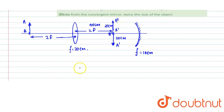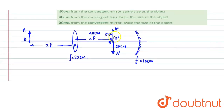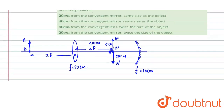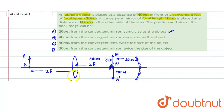Accordingly, A''B'' is the final image of AB. That means the image is 20 centimeters from the convergent mirror and it is the same size as the object. Accordingly, we can mark option A as the right answer.